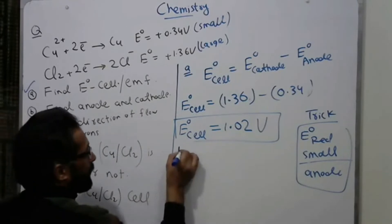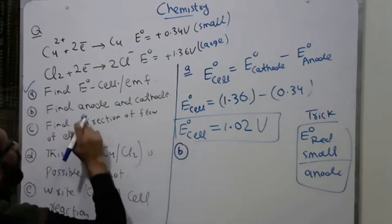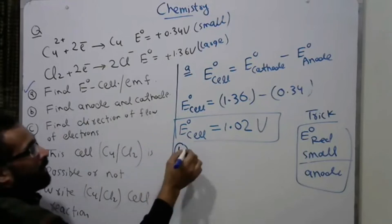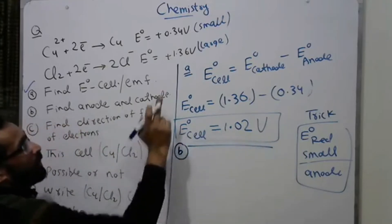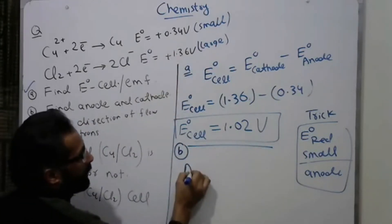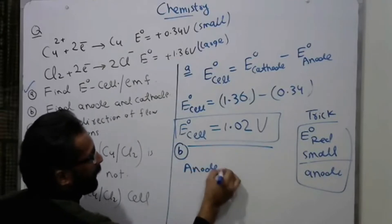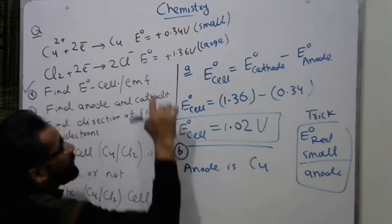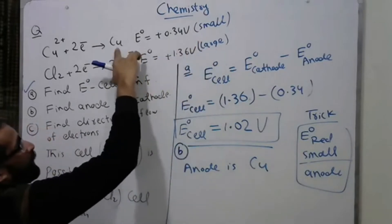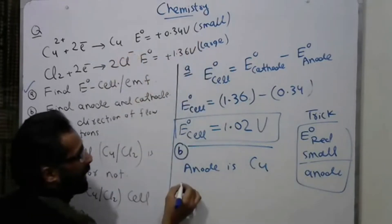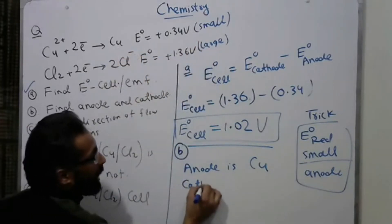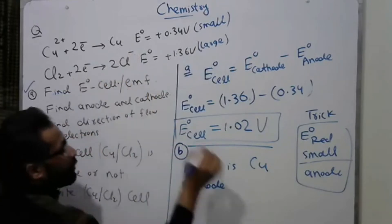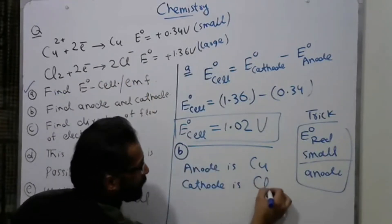Part B: find anode and cathode. The electrode with the smaller E° value is the anode — that is copper. The electrode with the larger E° value is the cathode — that is chlorine. So: anode is copper, cathode is chlorine.